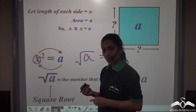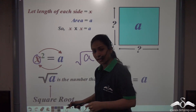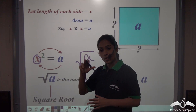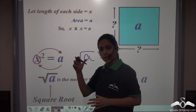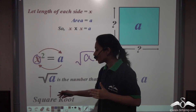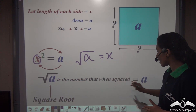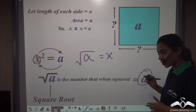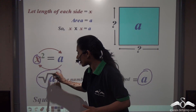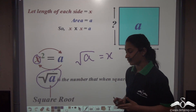So we can say that square root of a is equal to x, and when we square x into x — that is x squared — we get a. So root over a is the number which when squared gives us a, that is the area of the square.